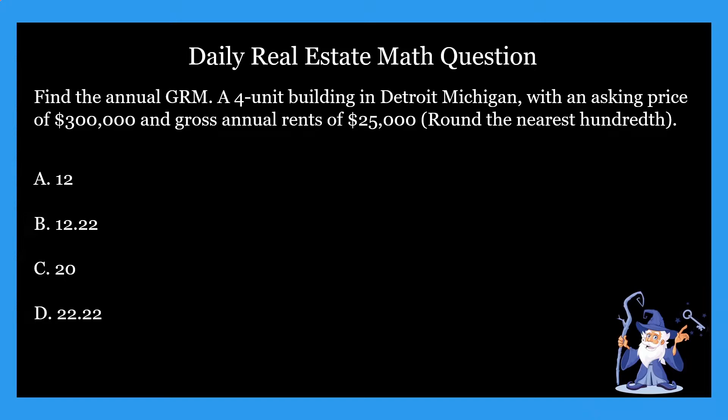We're going over GRM today — it's going to be our third GRM question, so hopefully by now you guys are experts. Find the annual GRM: a four-unit building in Detroit, Michigan with an asking price of $300,000 and gross annual rents of $25,000. Round to the nearest hundredth. The four options are: A) 12, B) 12.22, C) 20, or D) 22.22.